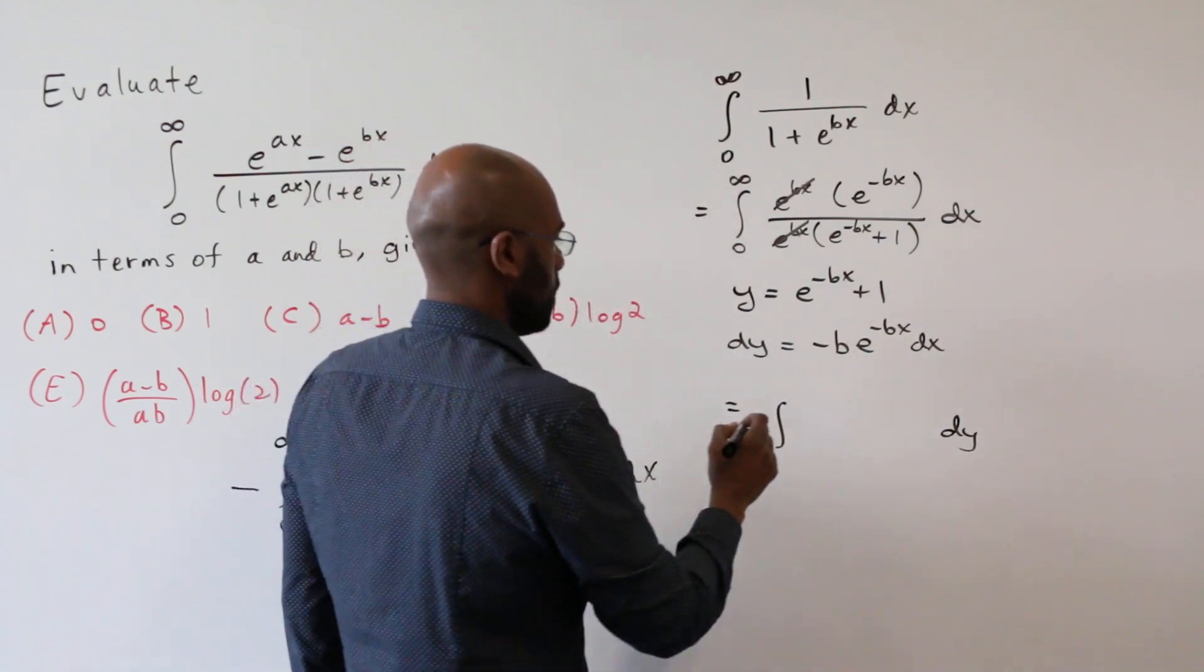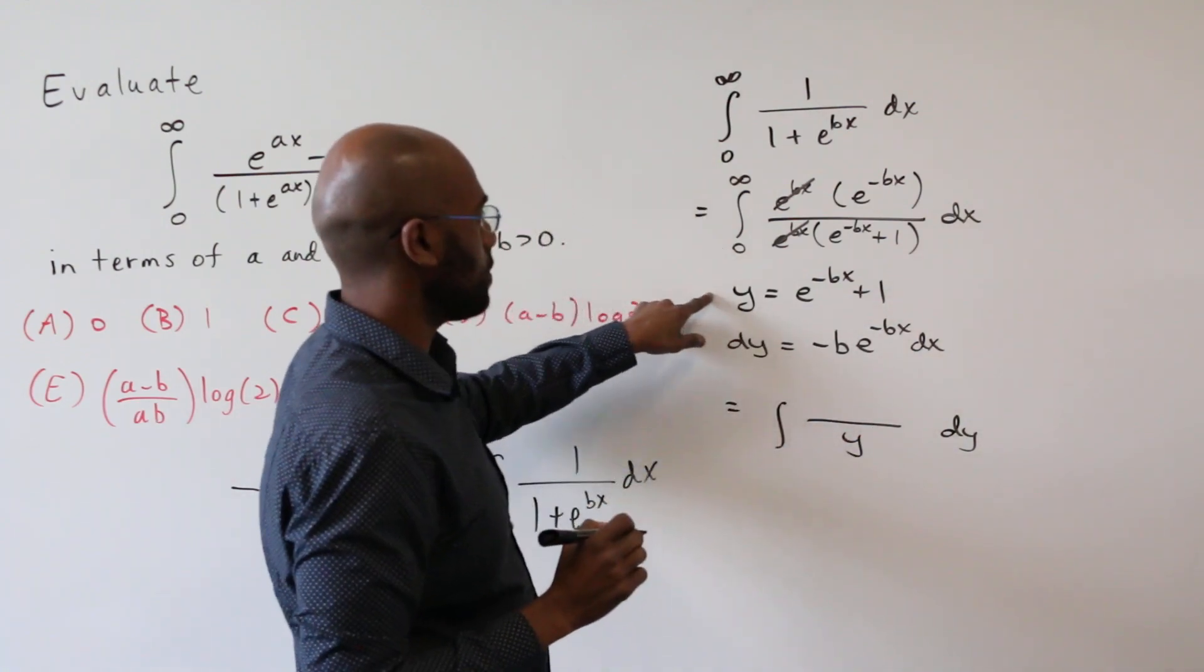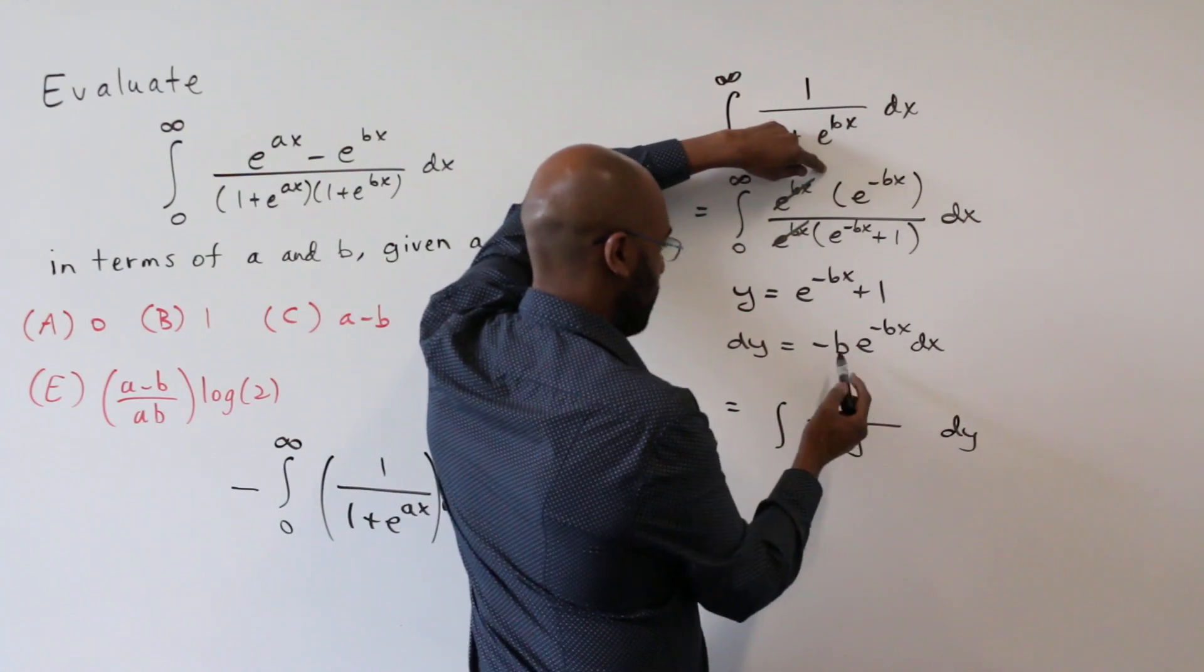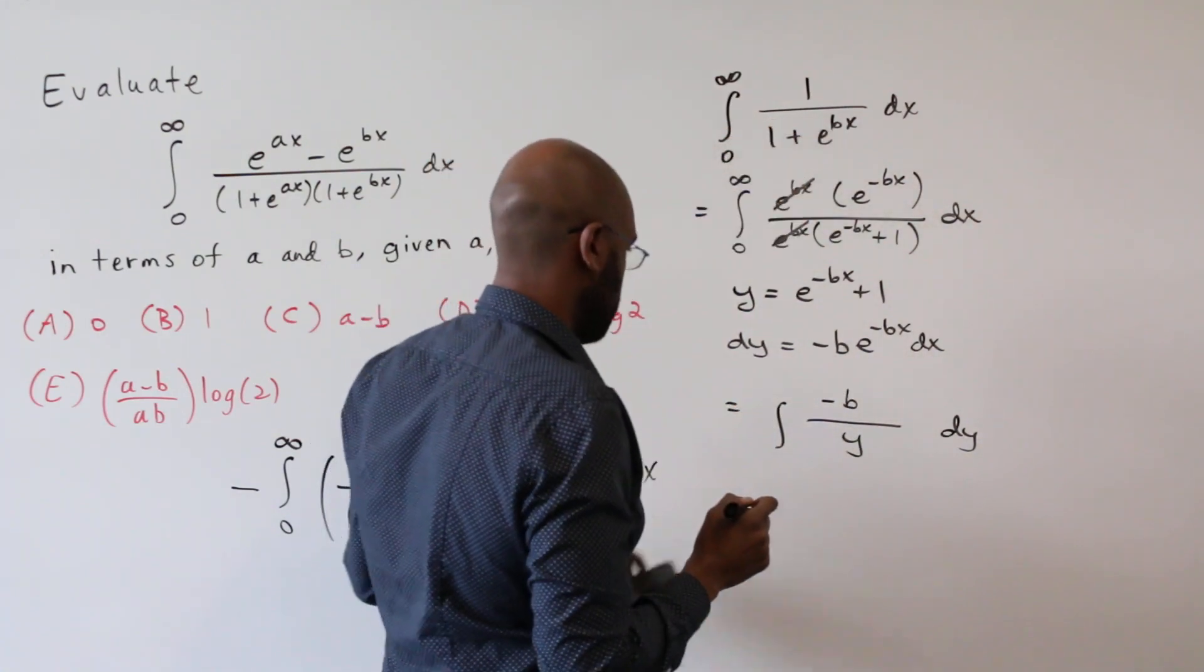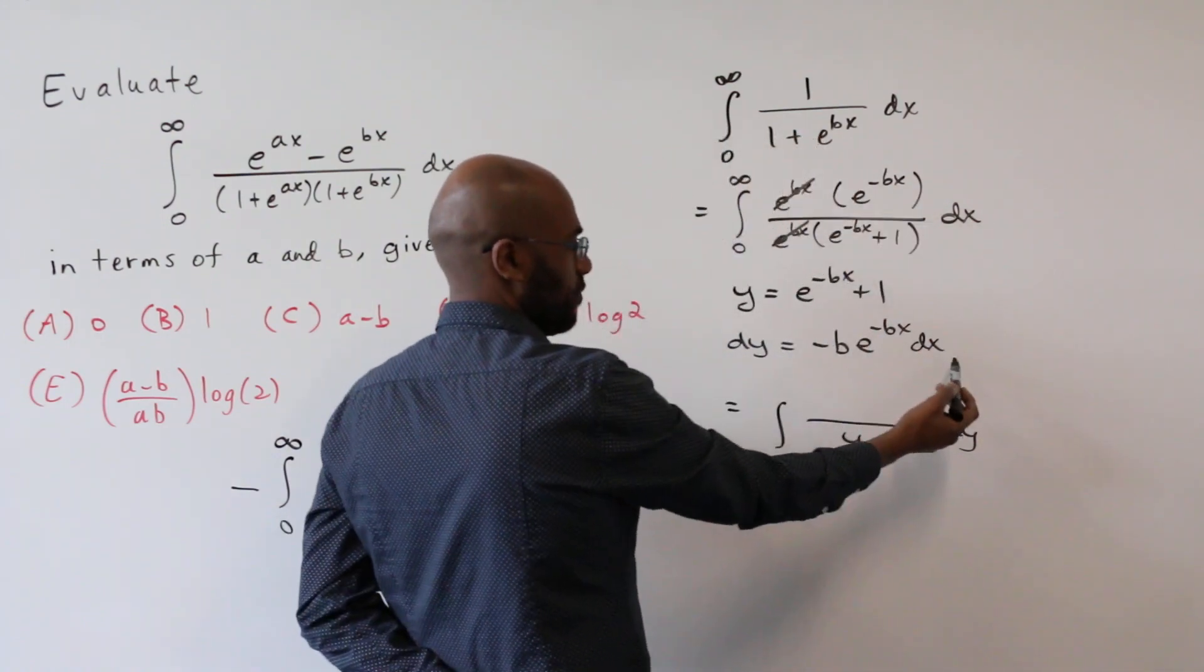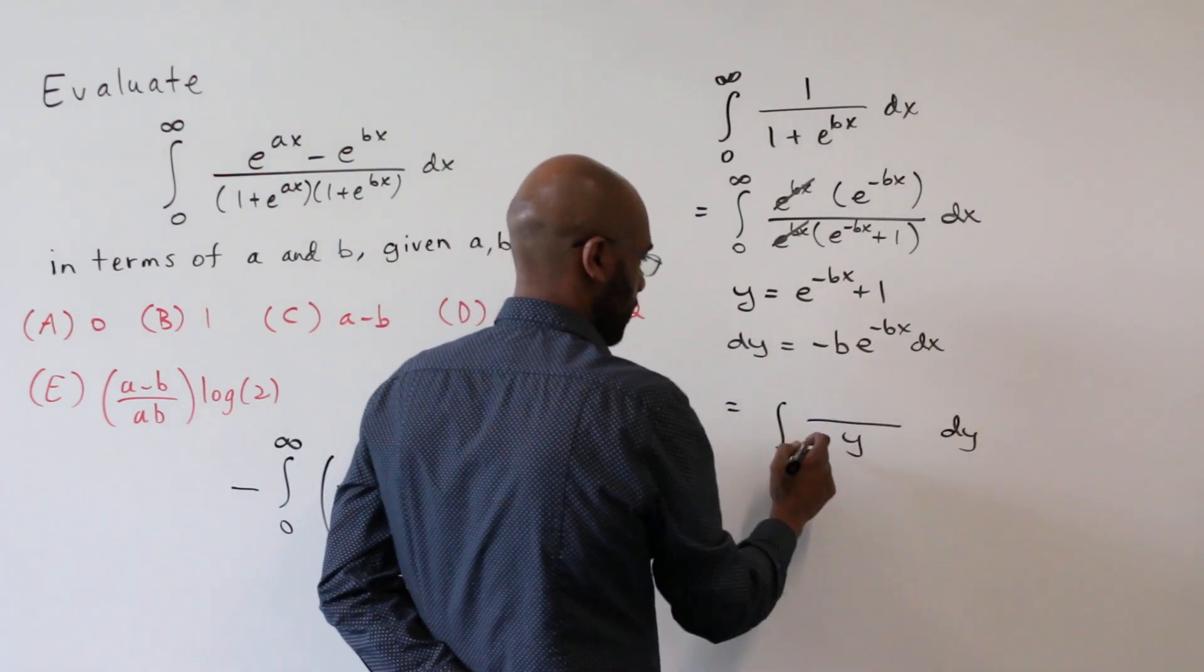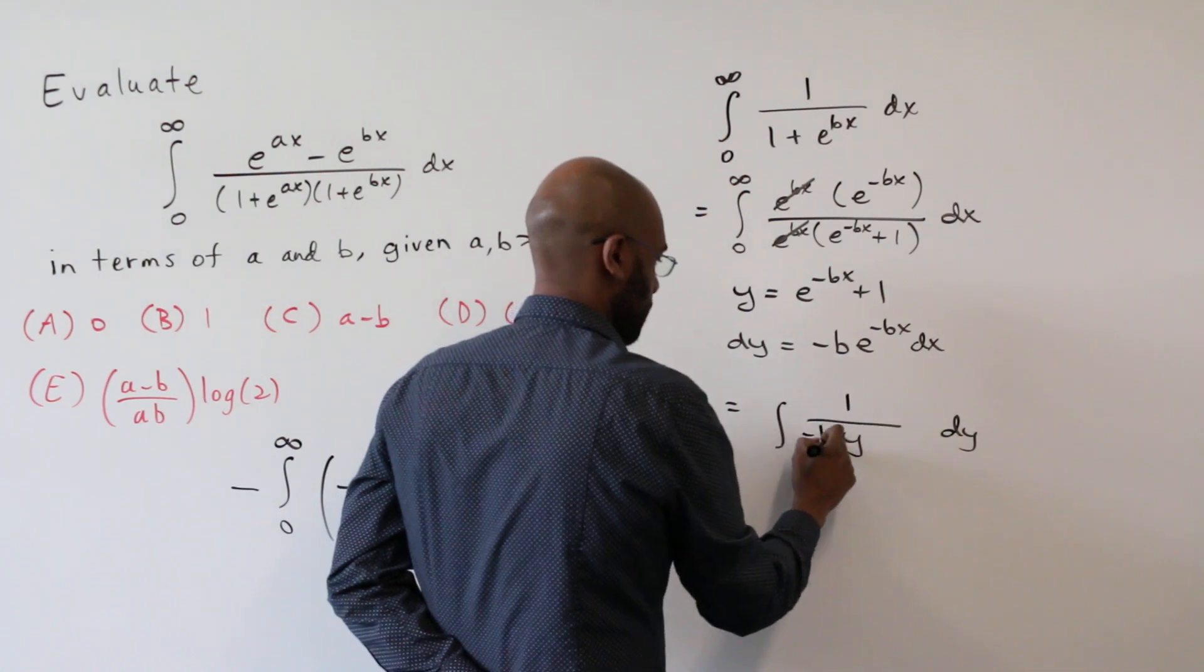Is going to be dy and we have a y in the denominator. And then in the numerator, we'll have a negative b, negative one over b. Because e to the negative bx dx is dy over negative b. So we'll have a one over negative b here.